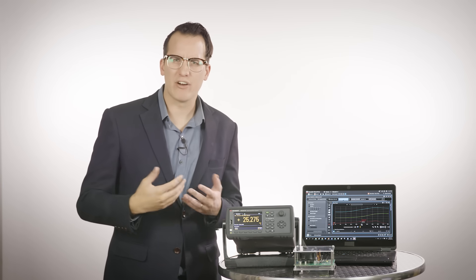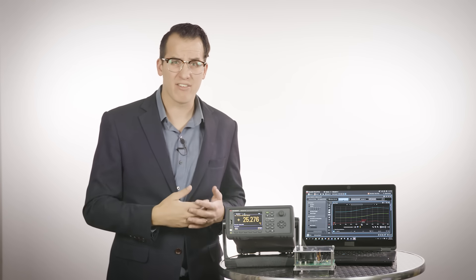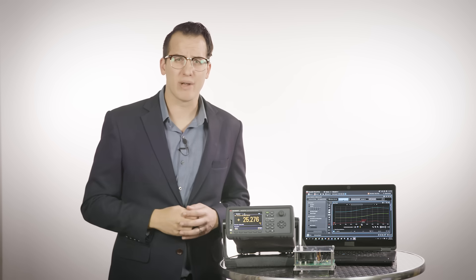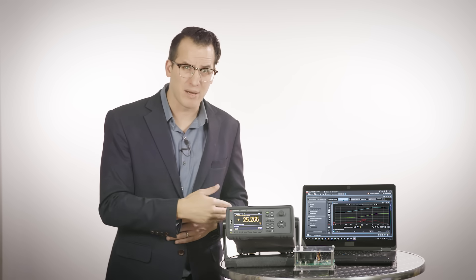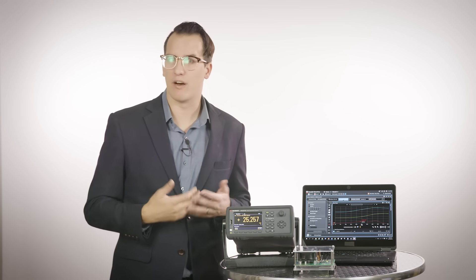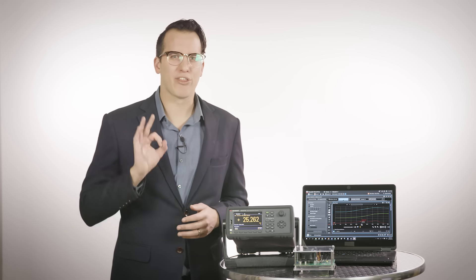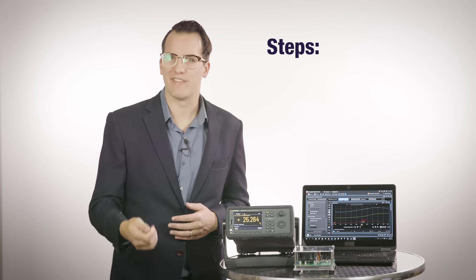I should point out that DACs generally have a memory limit when running tests. This one can store 100k readings into its internal non-volatile memory meaning you can power cycle it and not lose your readings. But when connected to BenchVue it can use the PC's memory to store up to 1 million readings. So those are the three main steps to making measurements with the DAC.